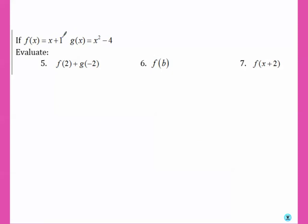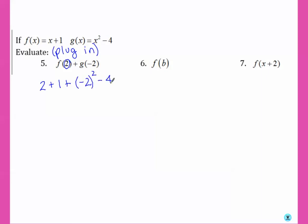Now, if f of x equals x plus 1 and g of x equals x squared minus 4, evaluate the following. Evaluate basically means plug in. So we're going to take whatever's inside the parentheses and plug it in where the x is. For f of 2, we plug 2 in for x, giving us 2 plus 1. For g of negative 2, we plug in negative 2, so we get negative 2 squared minus 4.